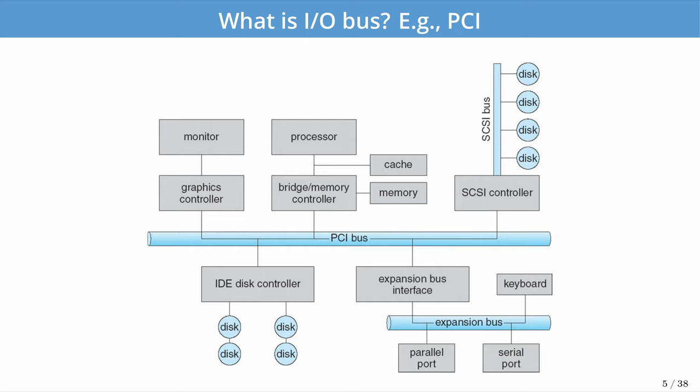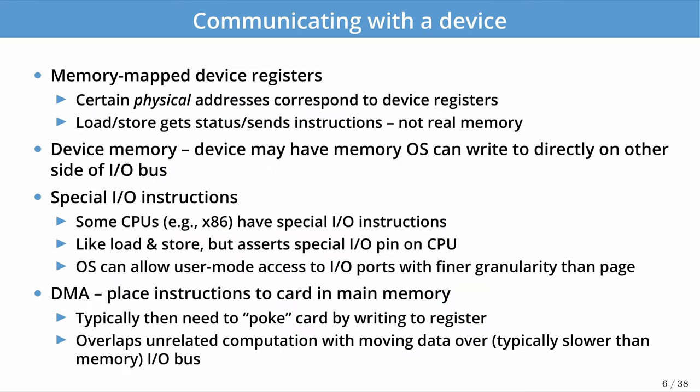Broadly speaking, buses are just interconnects that allow many devices and processors to communicate. The CPU communicates with devices through one of several methods. The most common today is memory-mapped device registers, where a certain range of physical addresses correspond to particular devices off a PCI bus or other buses. Loads and stores, or reads and writes to those memory locations, are actually triggering IO operations on the device. Typically these are just control operations to drive the real operations of the device.